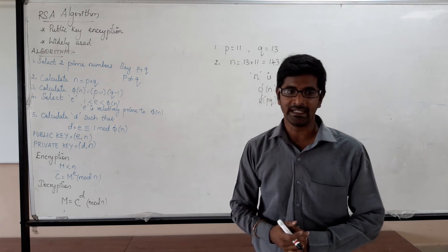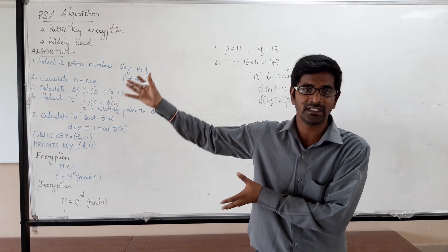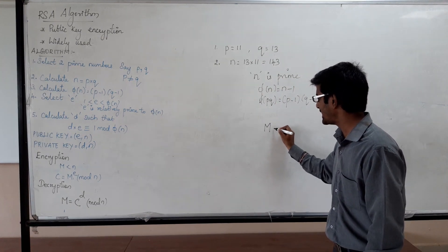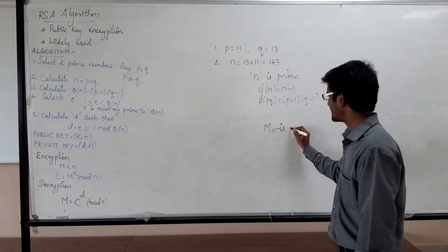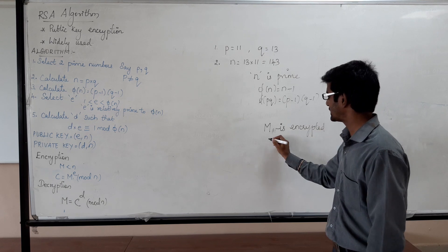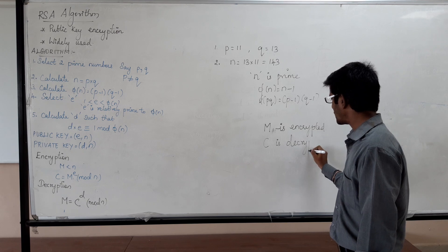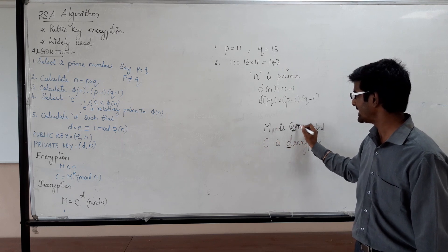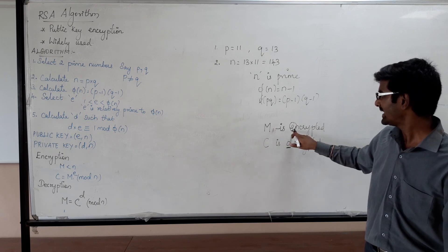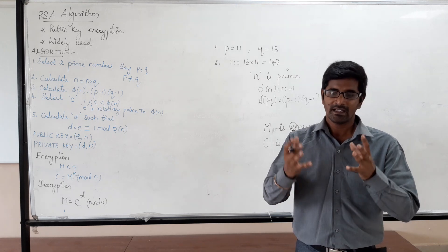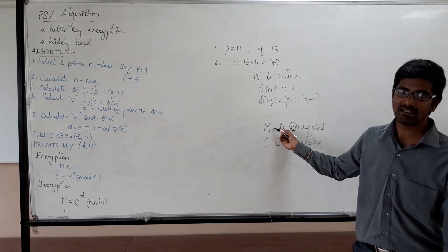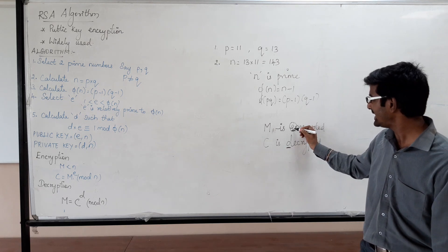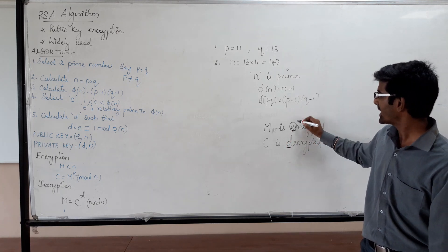After that we have to choose the public key E. The message is encrypted using the public key and the ciphertext is decrypted using the private key. E is the public key and D is the private key. After selecting E, we have to calculate D. There are two restrictions on the selection of E.